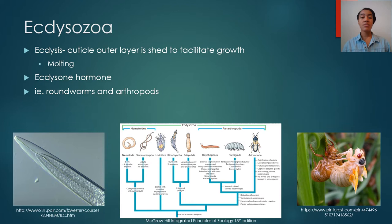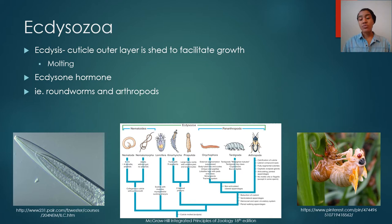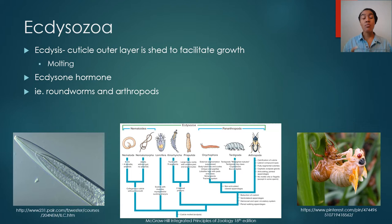Before we get into nematodes, I want to take some time talking about the larger group that nematodes fit within. This group is called Ecdysozoa. Ecdysozoa is a classification for organisms that undergo a process called ecdysis, or molting. That basically means they have an outer cuticle layer that they must shed in order to grow. Throughout different stages of their development, as they're growing from juveniles to an adult, they must first shed this outer layer in order to get to the next stage. This shedding is sometimes facilitated by the production of a hormone called ecdysone, which starts the process of molting and shedding.